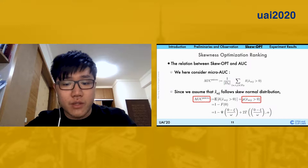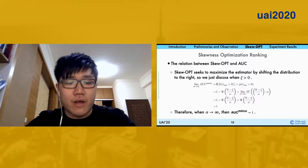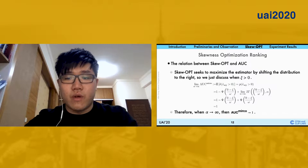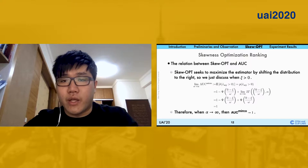As you can see, while alpha approaches to infinity, AUC approaches to 1. So there's no need to set any constraint on skewness optimizations while we are training.